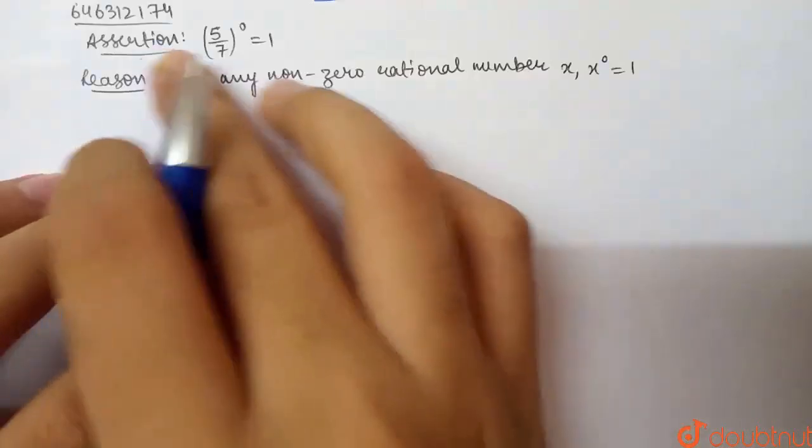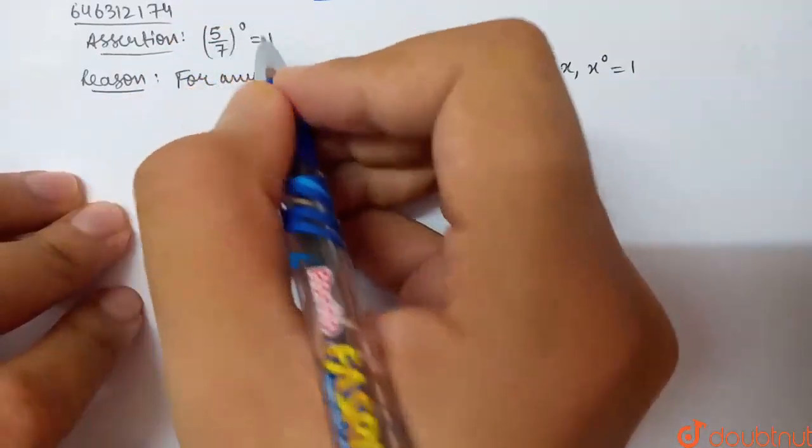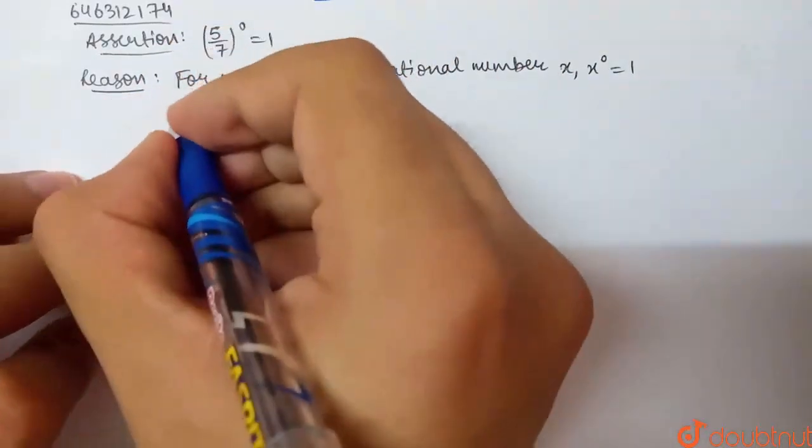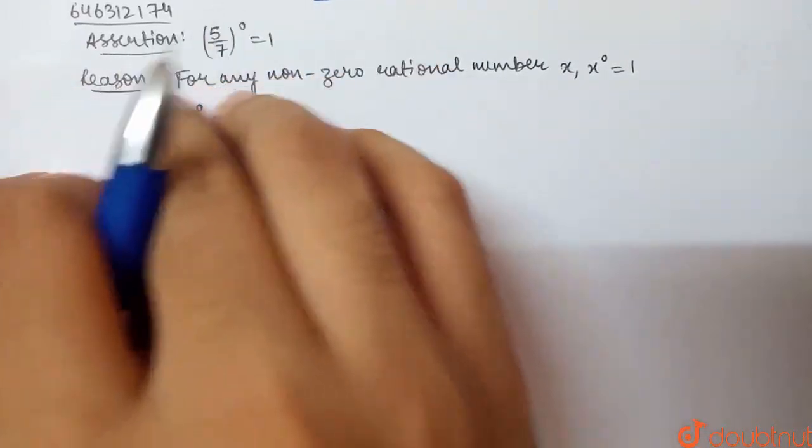In this question, we have this assertion and this reason given. So what does this assertion mean? 5 by 7 to the power 0 is 1. Now, what do we know? Anything to the power 0 equals 1, which is exactly given in the reason.